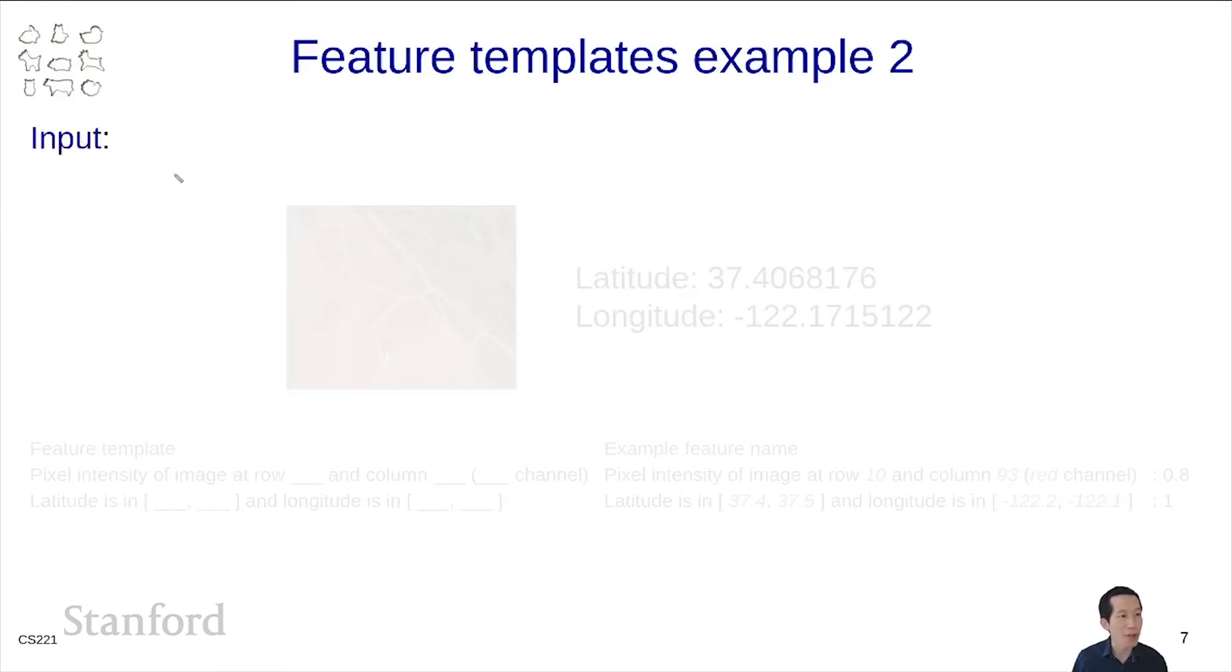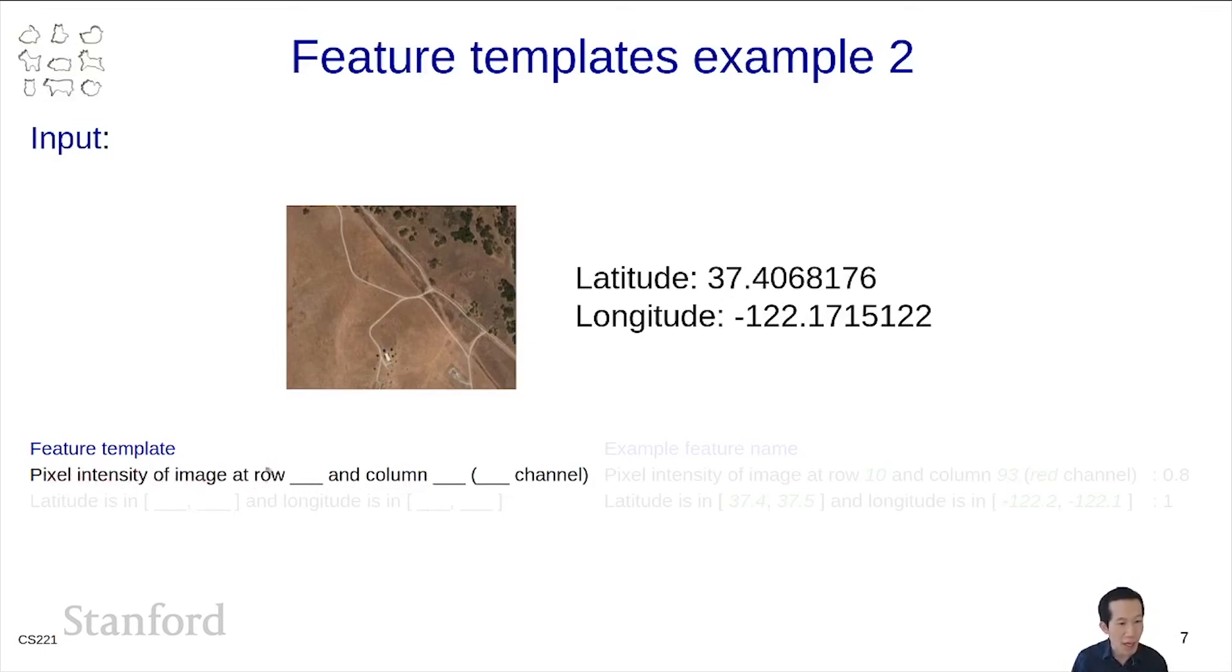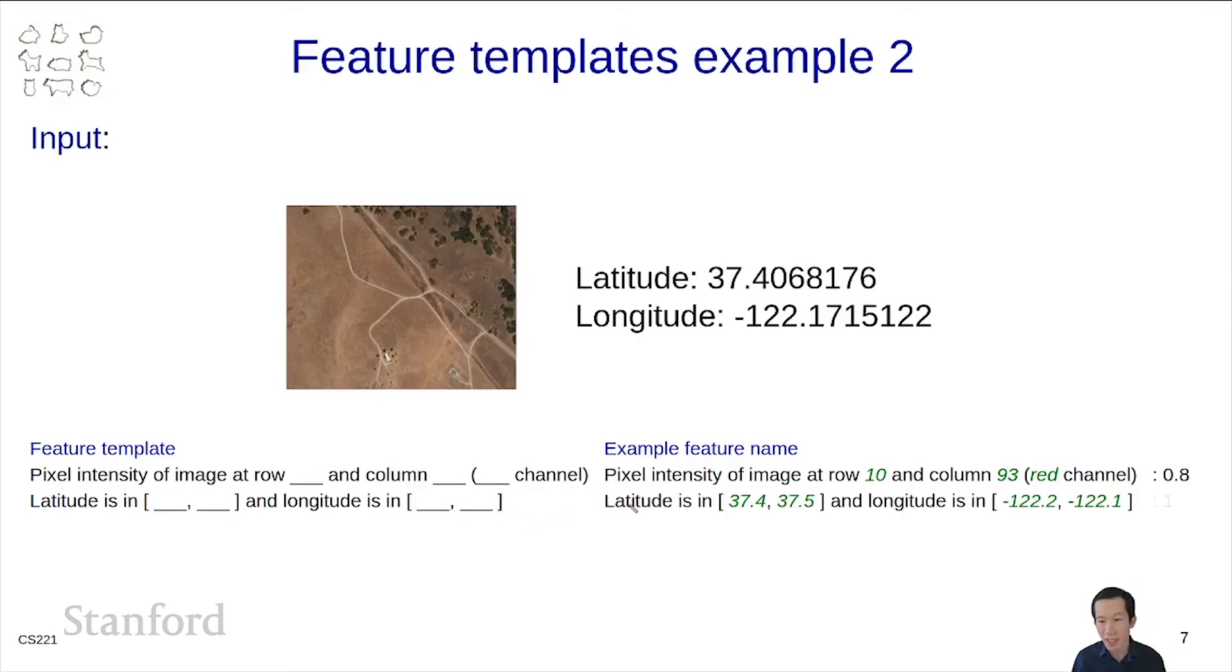Here's another example. Suppose the input is an aerial image along with some metadata about the location. The feature template in this case, we might want to look at the following. We want to look at the pixel intensity of this image at a particular row and a particular column. And it's a color image. So there's three channels RGB. We identify a particular channel that we're looking at. This might be instantiated as the pixel intensity of image at row 10 and column 93 red channel. Another feature template might look at the metadata, the location, and be a feature on whether the latitude is in a particular range and longitude is in a particular range. This feature template gets instantiated with particular values that denote ranges.